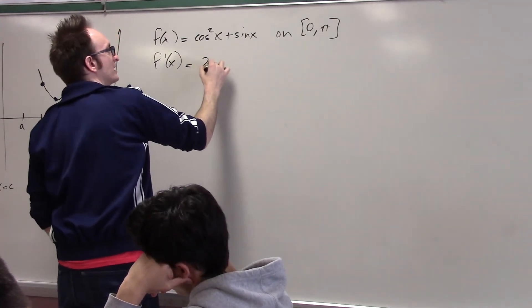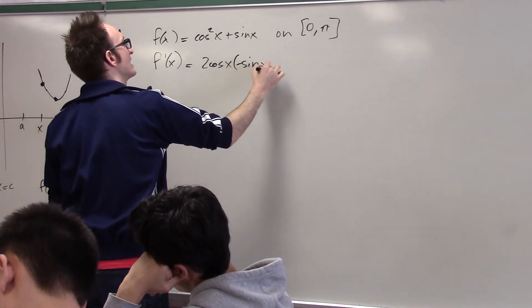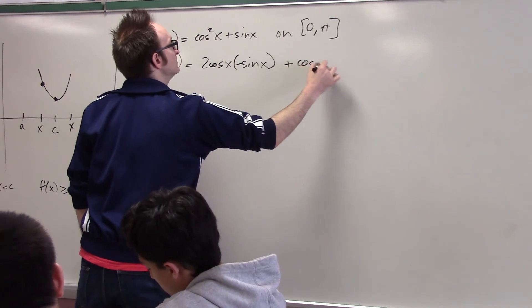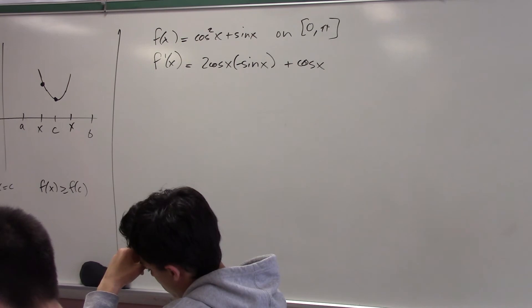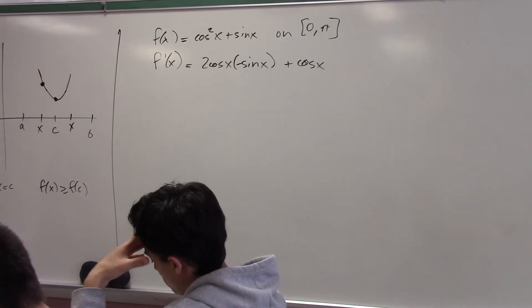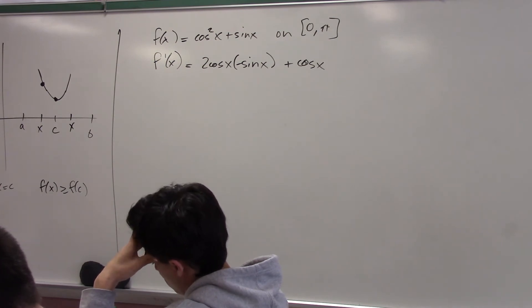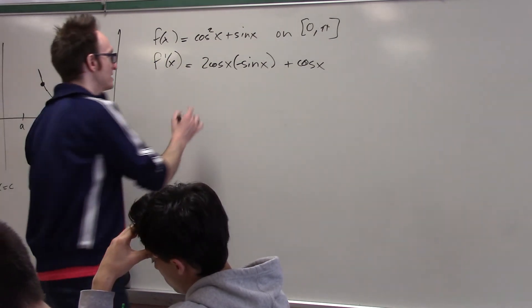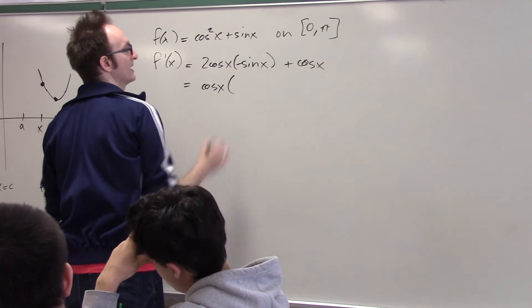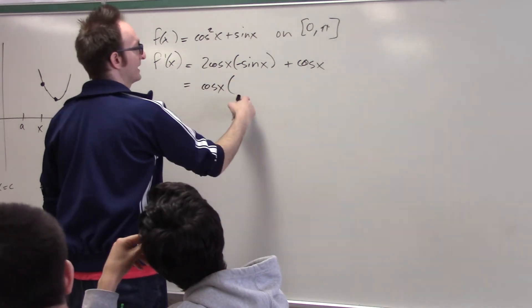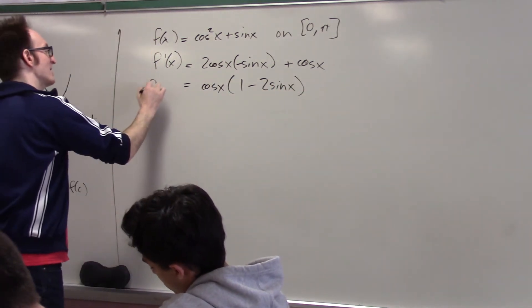So the derivative of cosine squared is 2 cosine to the 1, back inside, negative sine, yeah? Plus cosine. Okay, so unfortunately this derivative is kind of a drag, right? Okay, and whereas the calculus took me only like a second, now the pre-calculus is a little bit advanced. So the smart thing to do now is to factor this. So if I factor out a cosine, then I get basically 1 minus 2 sine x, yeah? All right, so that's my derivative.